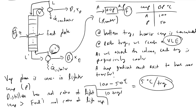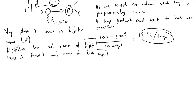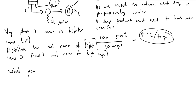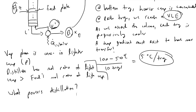An important note is what powers distillation. If you wanted to double the amount of feed processed — to make or purify more product — the parameter you must change is the reboiler duty Q. Doubling the molar flow rate being processed requires doubling the heat supplied in the reboiler to vaporize double the number of moles at the bottom plate. That is fundamentally how distillation works.